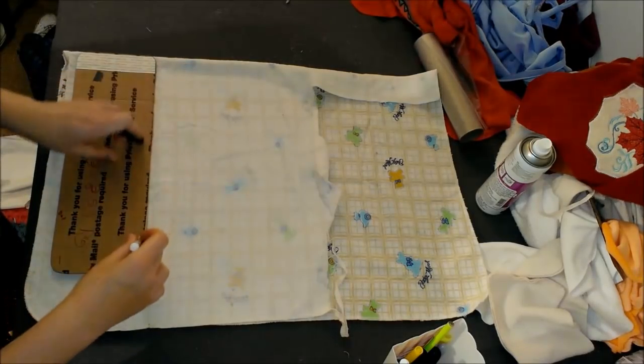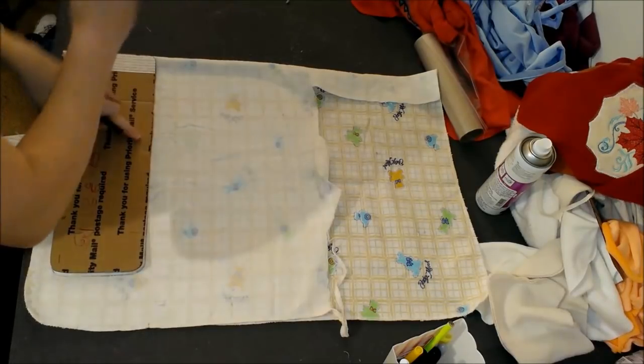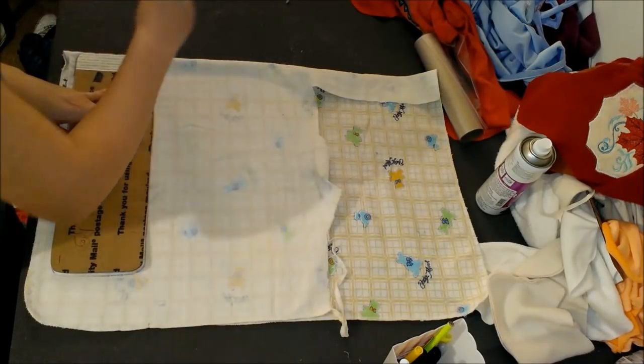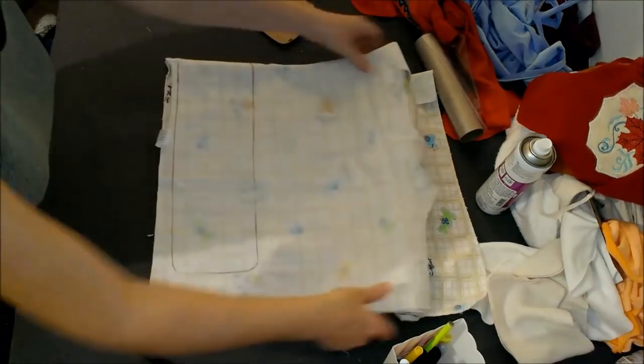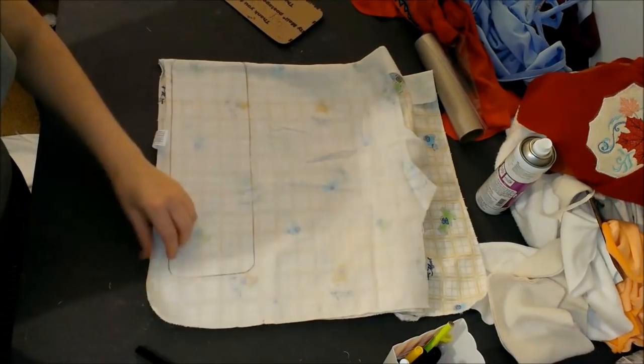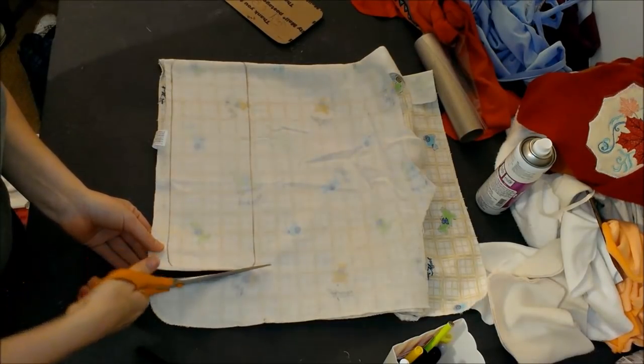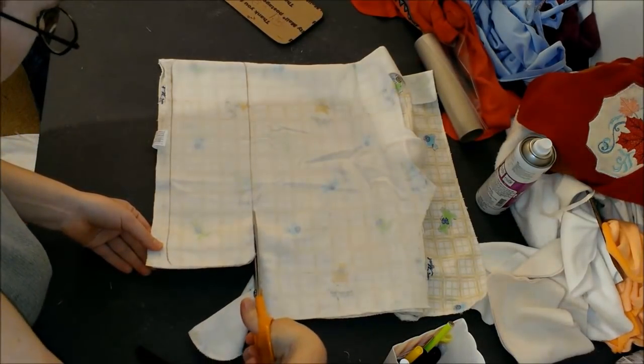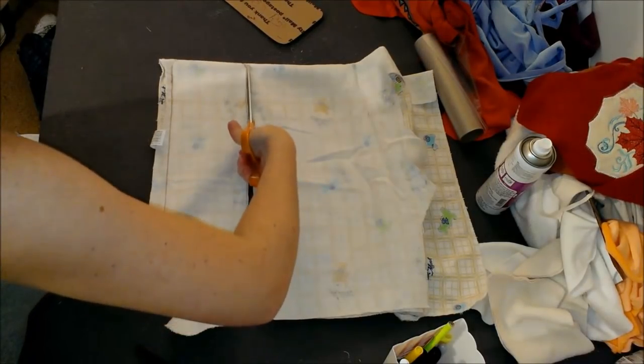So now I've taken my large soaker pattern, and I have placed that on the fold at the top of the receiving blanket. So now when I go to cut it, I'm not going to cut the top portion. I'm going to cut all the way around it. That way it'll be twice as long. And I will show you why I'm doing it this way in just a moment.